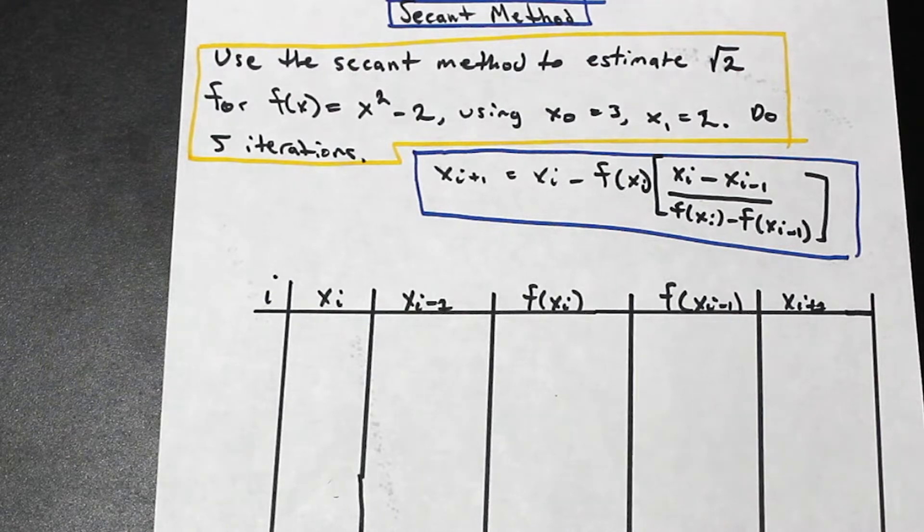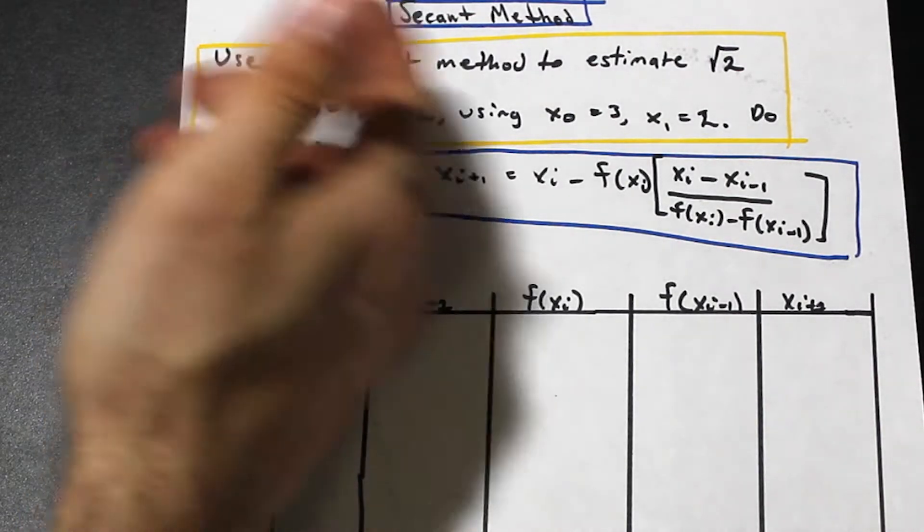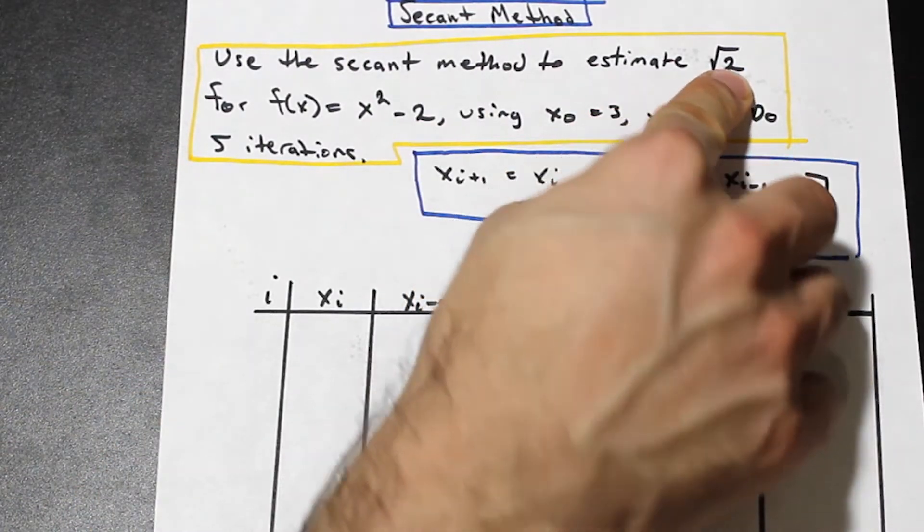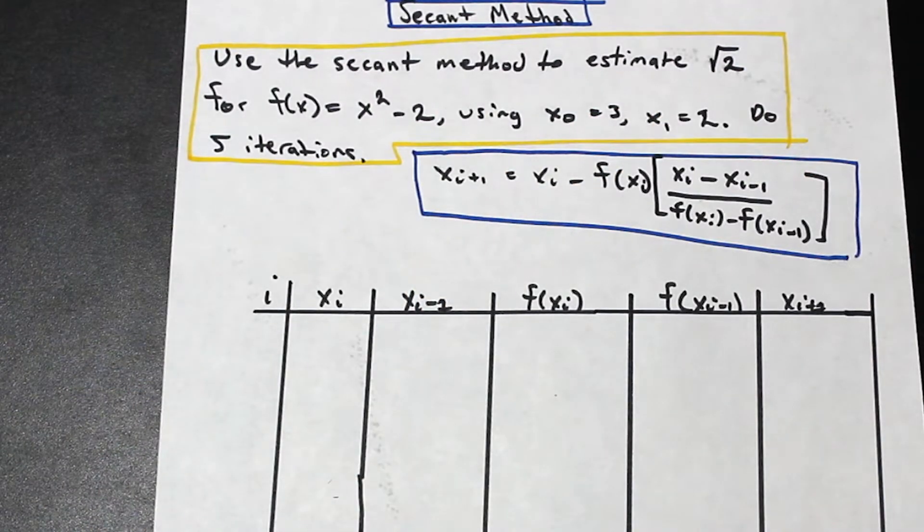secant method is essentially an algorithm that's used to estimate the square root of a given function. So here you can see that we're estimating root 2, and it assumes that a section of the function is approximately linear in the region of interest. And then it uses successive secant lines and the roots of those lines to approximate a root. So that's essentially a brief explanation of what the secant method is.